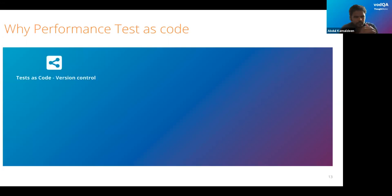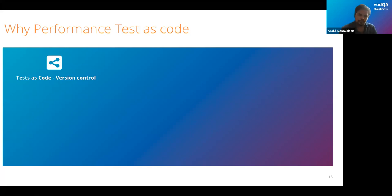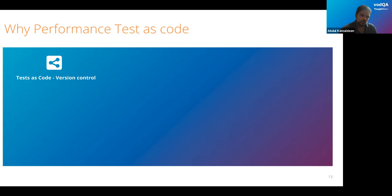The advantages of keeping performance tests as code: first is version control. It will be more version-control-friendly. You can track every commit showing how your scripts progressed from an early stage. You can have multiple commits, peer-review your code, and track every change in your performance code. Most tools follow a repository-based approach, so keeping your performance tests as code adds significant advantage.